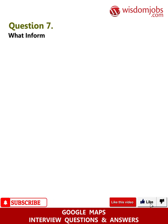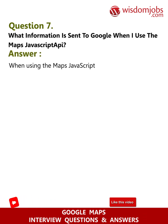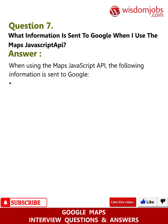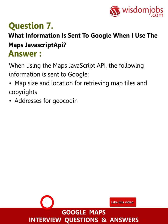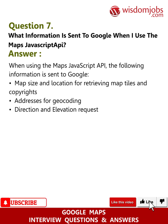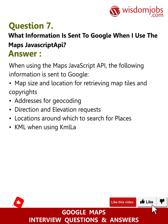Question 7: What information is sent to Google when I use the Maps JavaScript API? Answer: When using the Maps JavaScript API, the following information is sent to Google: map size and location for retrieving map tiles and copyrights, addresses for geocoding, direction and elevation requests, locations around which to search for places, and KML data when using a KML layer.